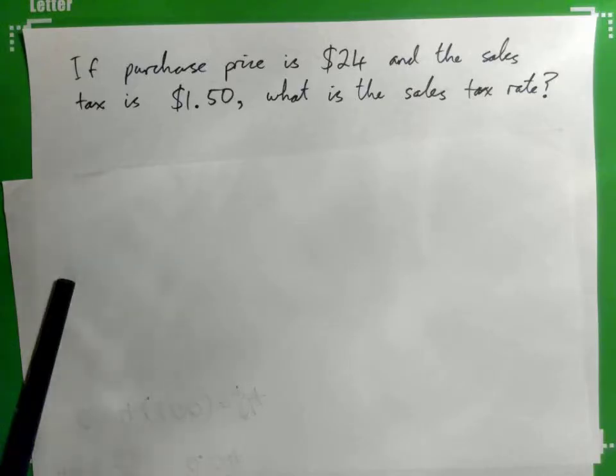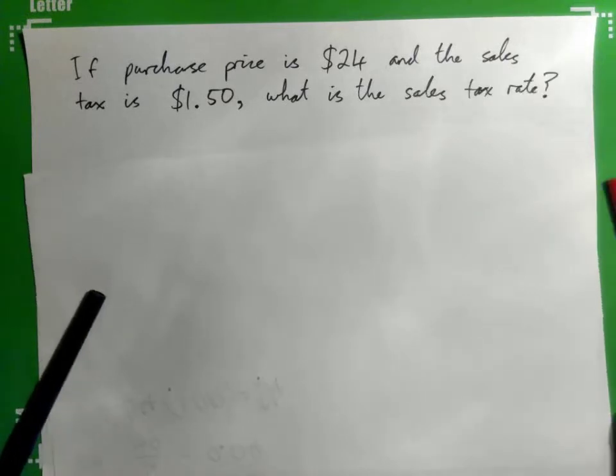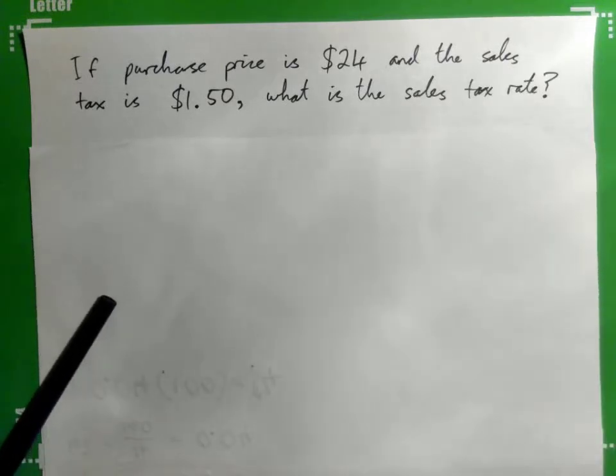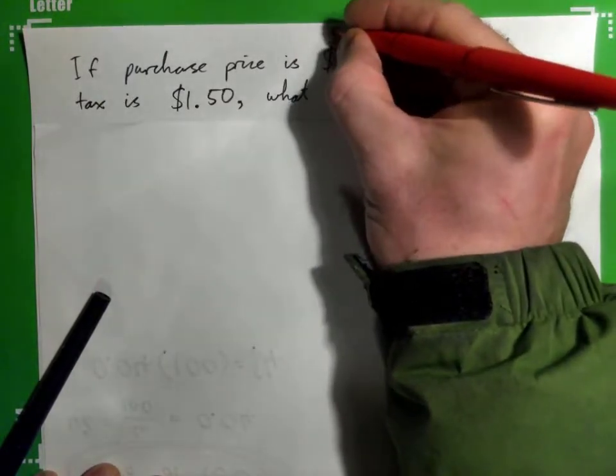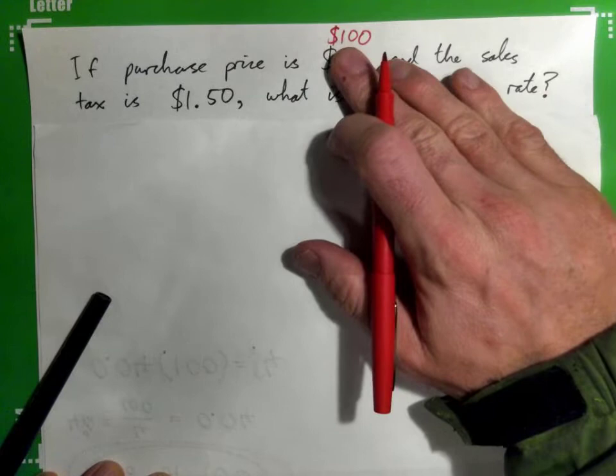So I just thought of a nice, easier number to start out with. I want you all to just solve this, and imagine a purchase price is $100. It's a nice round number. Forget 24, imagine it's 100.